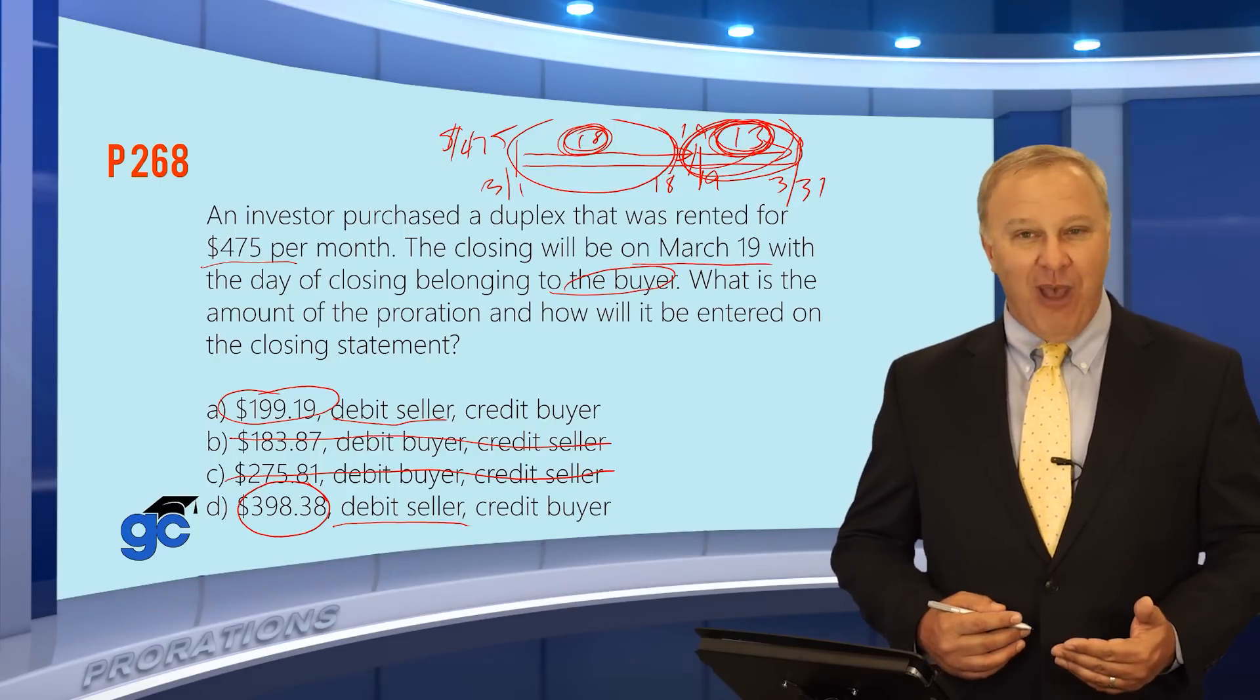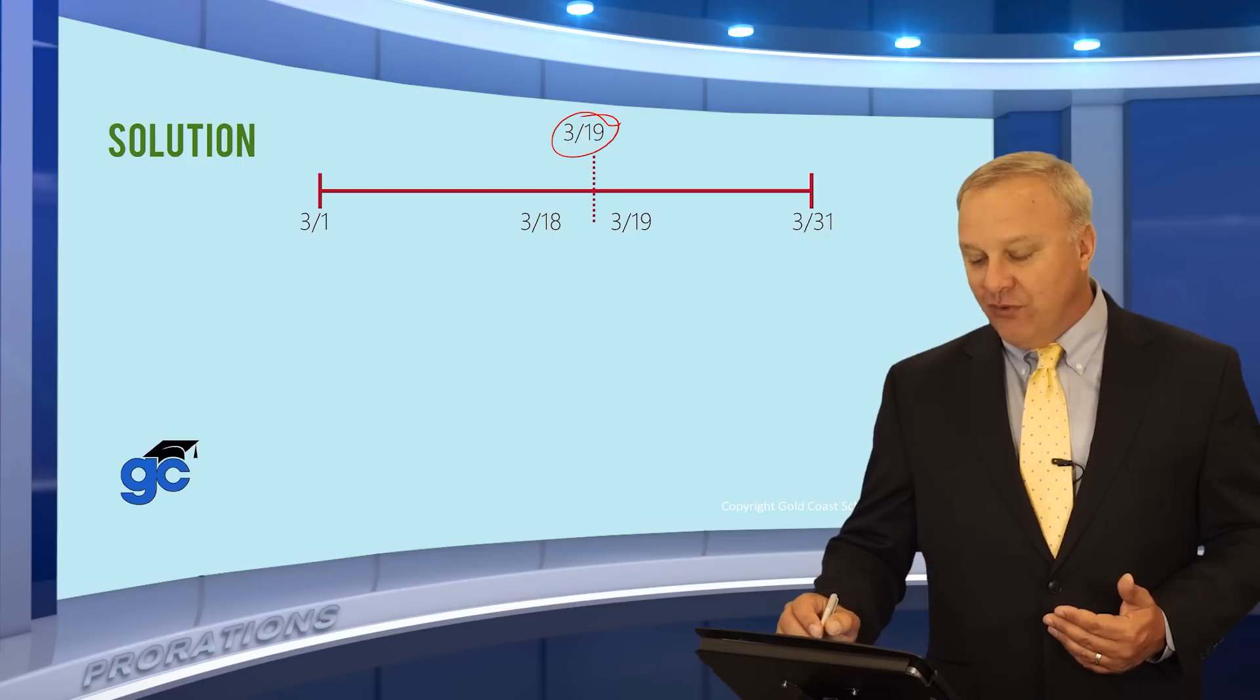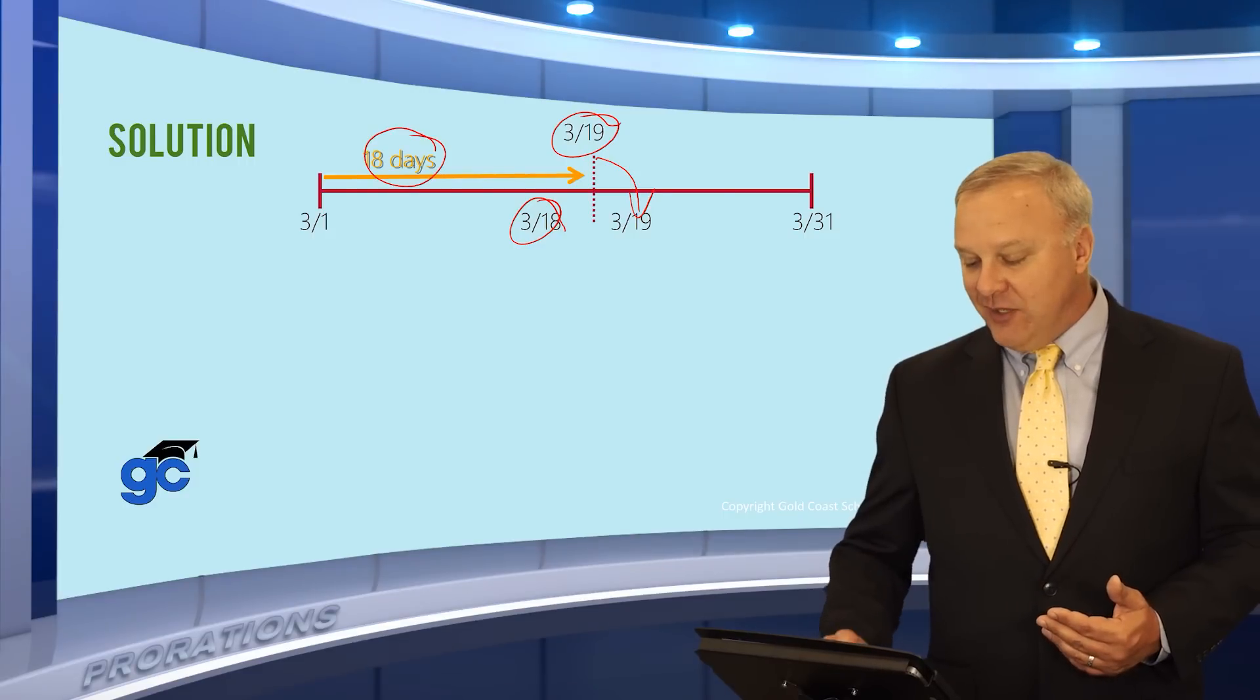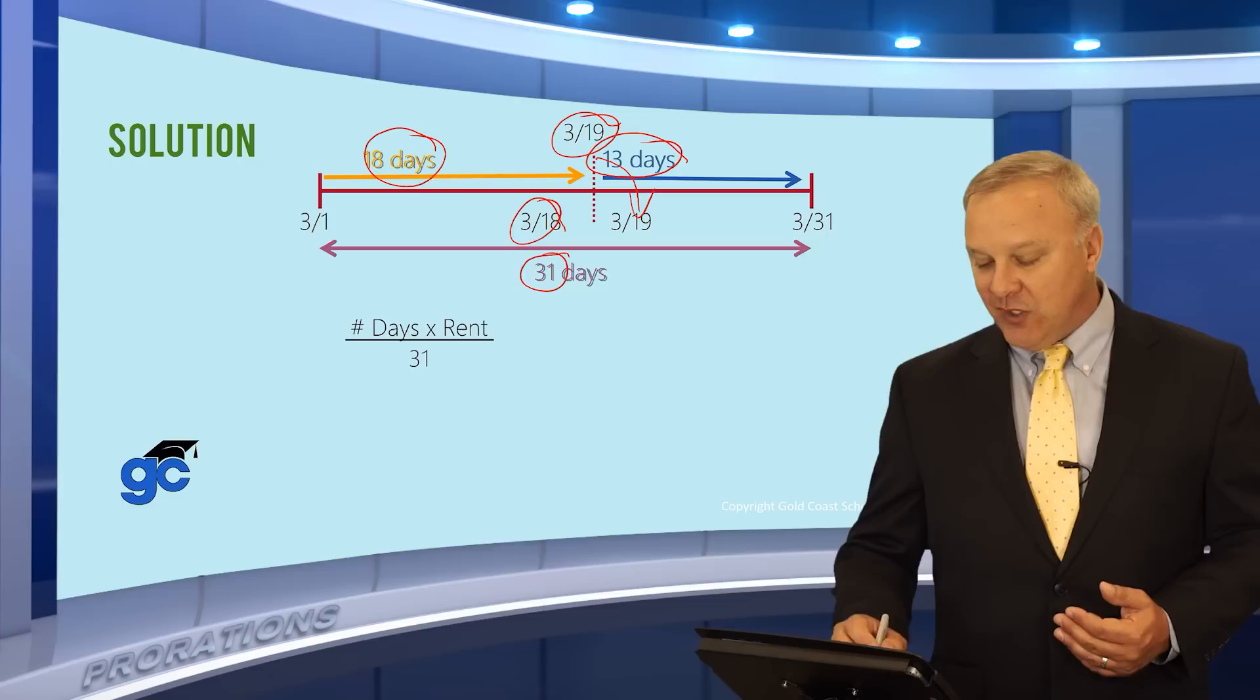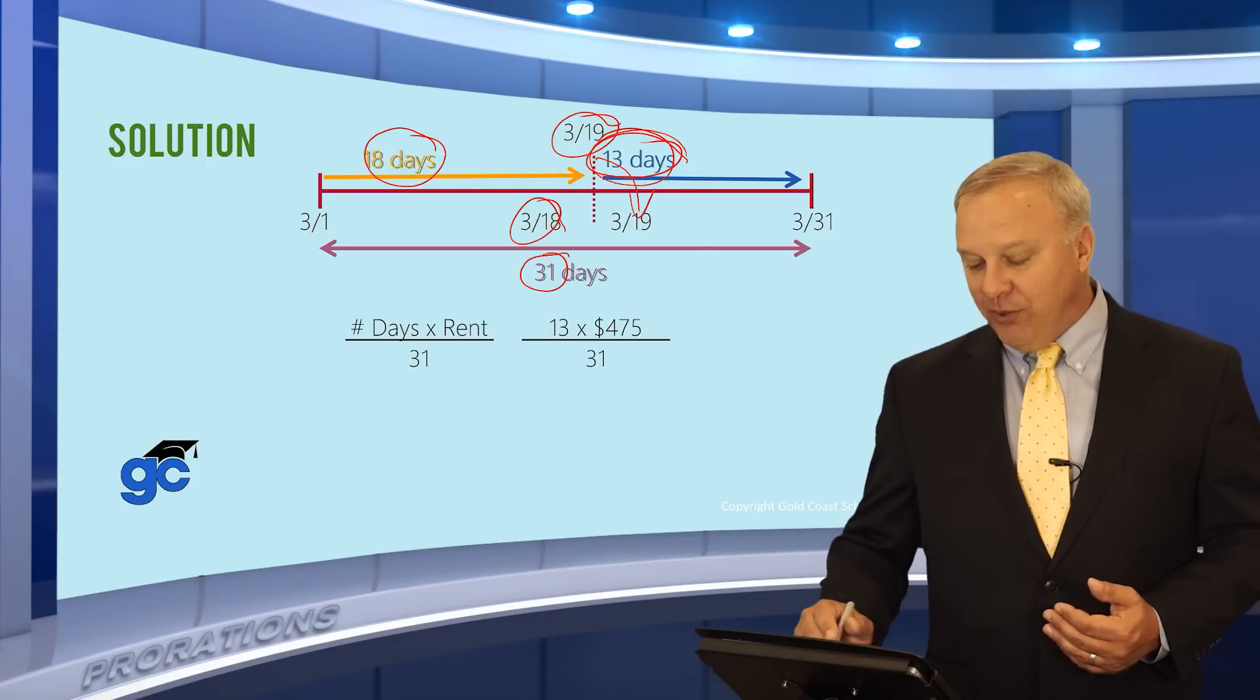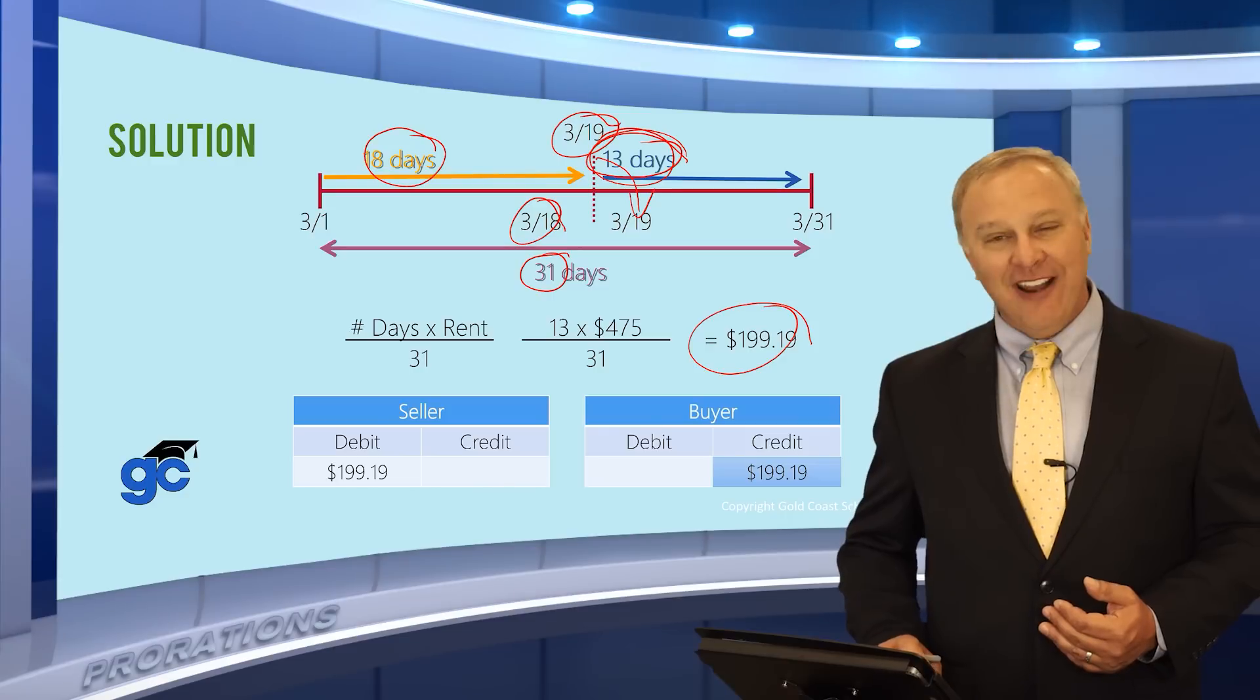So the answer here is going to be A, which says debit the seller, credit the buyer, $199.19. Let's take a little closer look at that. As we said, we drew the timeline. There's your day of closing up top. It goes over to the buyer's side, which means the last day for the seller is the 18th. We calculated that was 18 days, which means over on the buyer's side, we've got 13 days. Total of 31 days in the month. Plugging this into our formula, the number of days, which in this case will be 13 times the rent, which was given to you in the question, divided by 31. Plug the numbers in, 13 times 475 divided by 31, and the seller will be debited $199.19, which of course is a credit to the buyer. Debit to the seller, credit to the buyer on the closing statement.